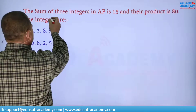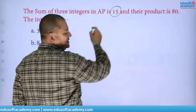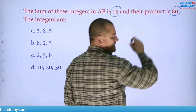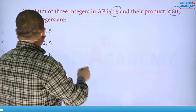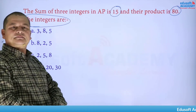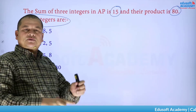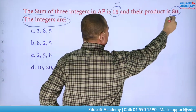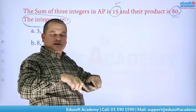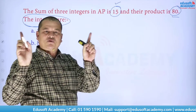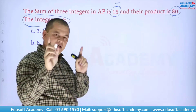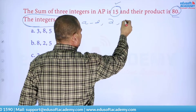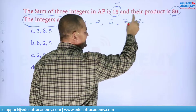The first question: the sum of three integers in AP is 15 and their product is 80. What are the integers? Let the three numbers in AP be a−d, a, and a+d respectively.